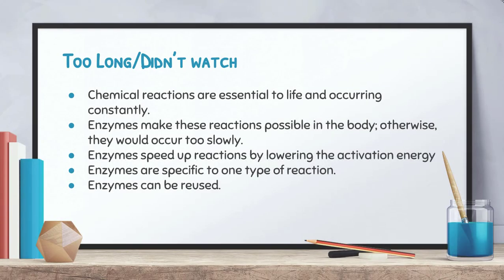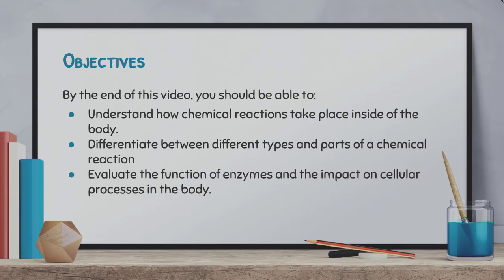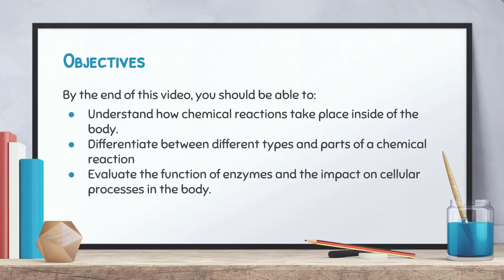So that's the basics of chemical reactions and enzymes. Chemical reactions are essential to life and are constantly occurring inside your body. Enzymes make these reactions possible — otherwise they would occur too slowly and all life could not exist. Enzymes speed up reactions by lowering the activation energy required, are specific to just one type of reaction, and can be reused over and over again. We'll see you in our next unit, which is going to focus on cells and how they function. Have a great day!